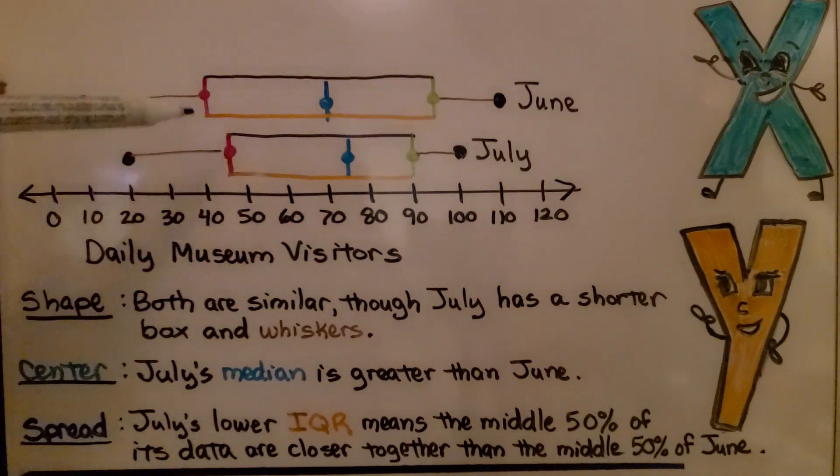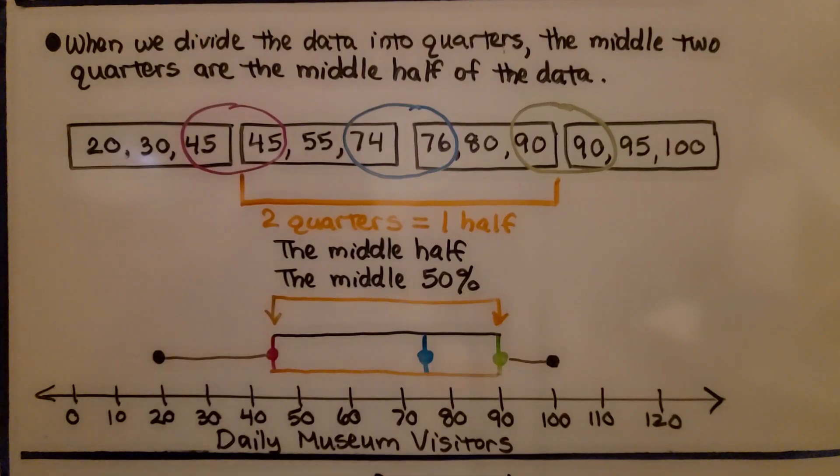See? The box is shorter, isn't it? The IQR is lower. So that sounded kind of confusing. What did they mean middle 50% of its data? So remember in the last video,